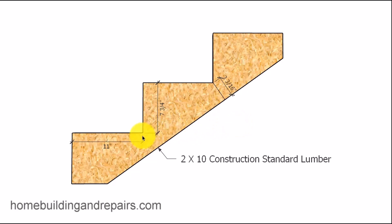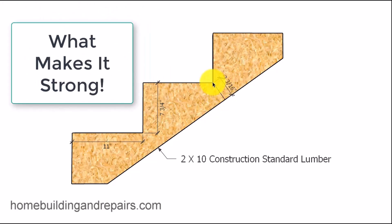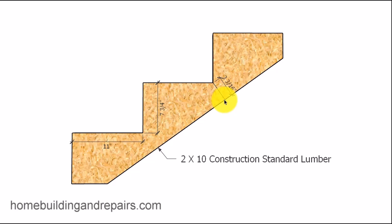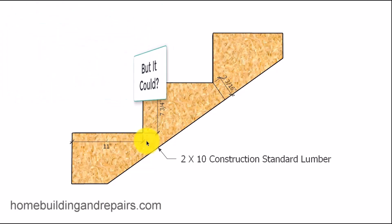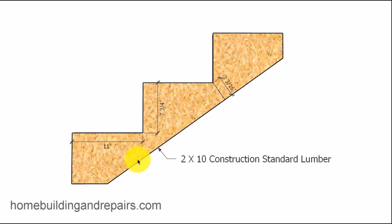Here's a 2x10 stair stringer with a seven and three-quarter inch riser and an eleven inch tread. It has about a three and an eighth to three and a quarter inch remaining — we used to call this the meat of the stair stringer. That's less than a two-by-four, and while I'm not suggesting this set of stairs will fall apart, you could always nail some support boards underneath it.